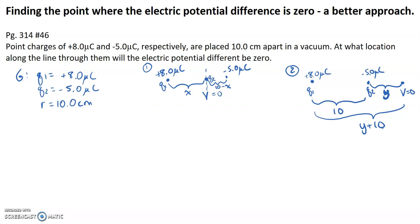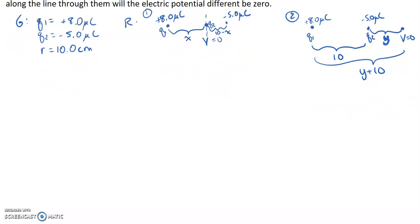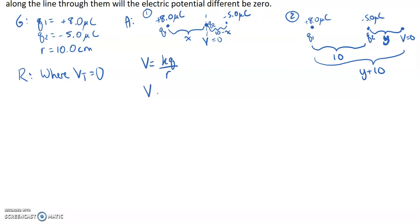We want to find these two positions where the total electric potential difference is zero. Remember that the total electric potential is V_total equals V1 plus V2, and the electric potential for each charge is V equals k times q divided by r. Because the total is equal to zero, we write: V_total equals k·q1/r1 plus k·q2/r2 equals zero.